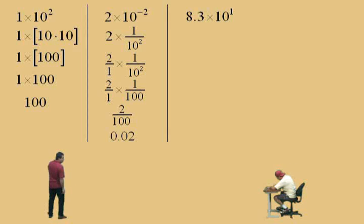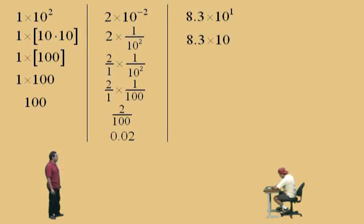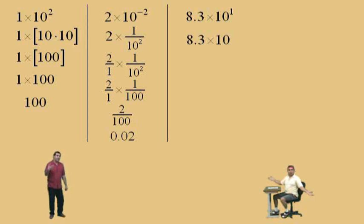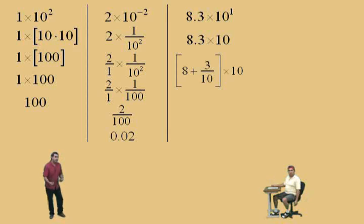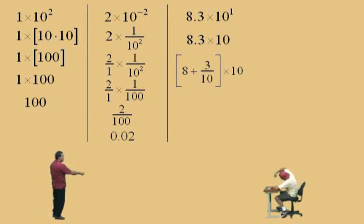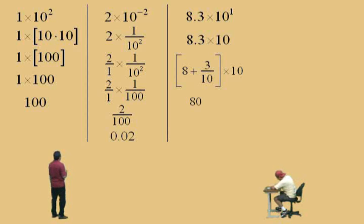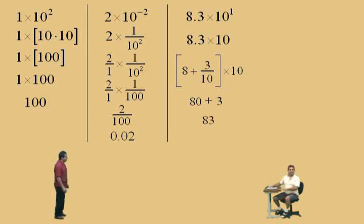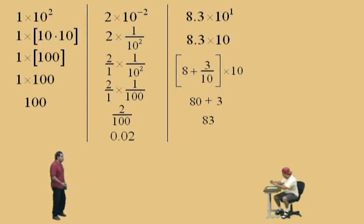Eight point three times ten to the first power — that means eight point three times ten. Eight point three means eight plus three tenths. If we have eight and three tenths and multiply it by ten, we use the distributive property. Eight times ten is eighty, plus three tenths times ten is three, and eighty plus three is eighty-three. So eight point three times ten to the first power equals eighty-three.